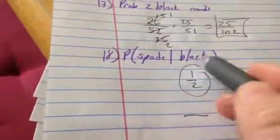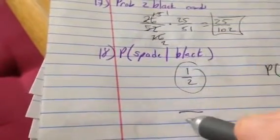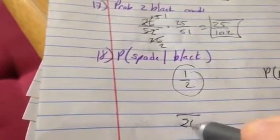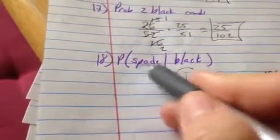You could also think of it as black cards. You already know you picked black, so that's your given, and there are 26 blacks in the deck. And of those blacks, 13 of them are spades. So again, that reduces to one half.